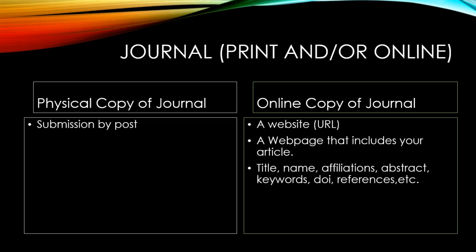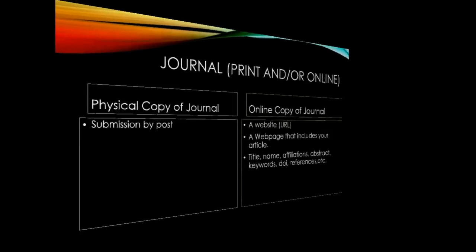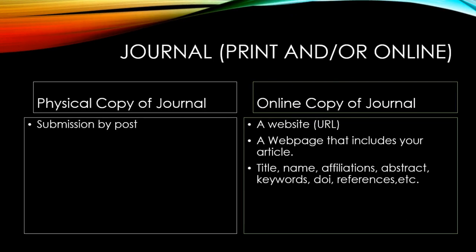One page is basically assigned to each author, and that page carries the title of the research paper, name of the author, their affiliations, email ID, abstract, keywords, DOI number, references, and some other metadata such as when the paper was submitted, volume, and issue. But the most important elements are the title and abstract along with the keywords and name of the author — so one web page is basically assigned to your research article.